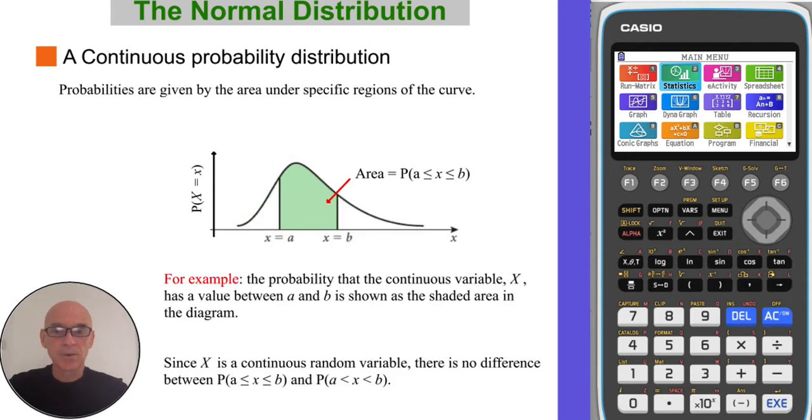For a continuous probability distribution, probabilities are given by an area under a specific region of the curve. For example, the probability that x lies between a and b, shown by this shaded area here.